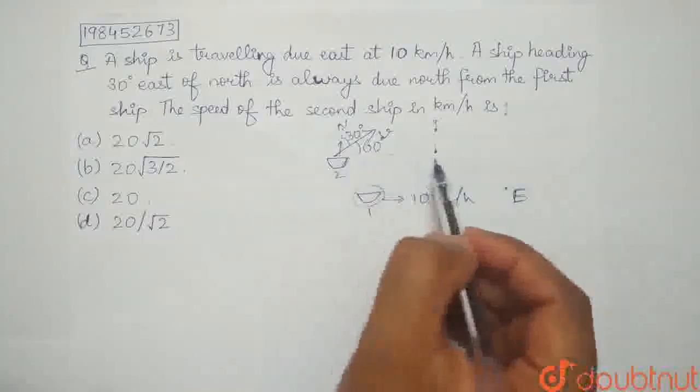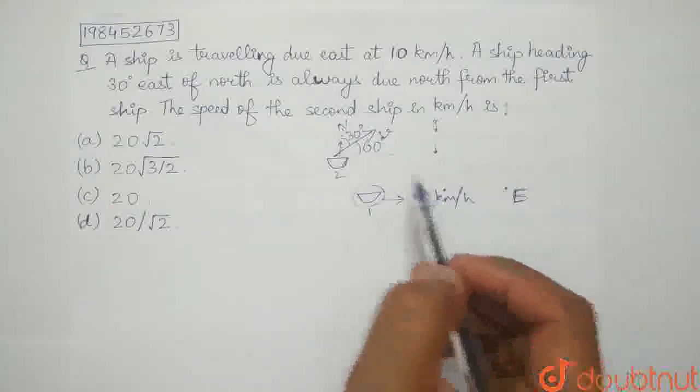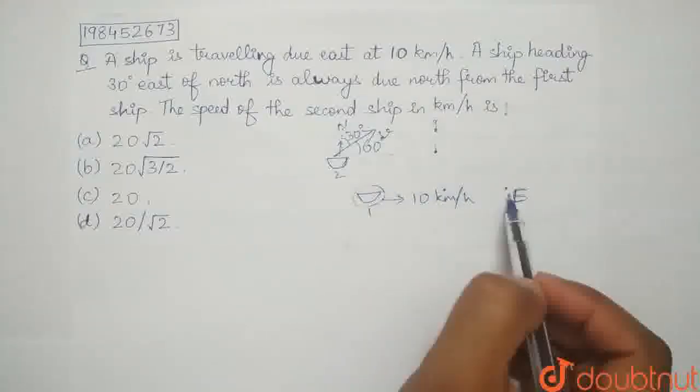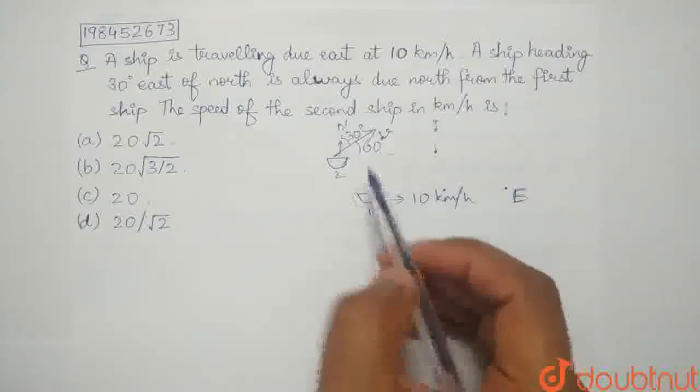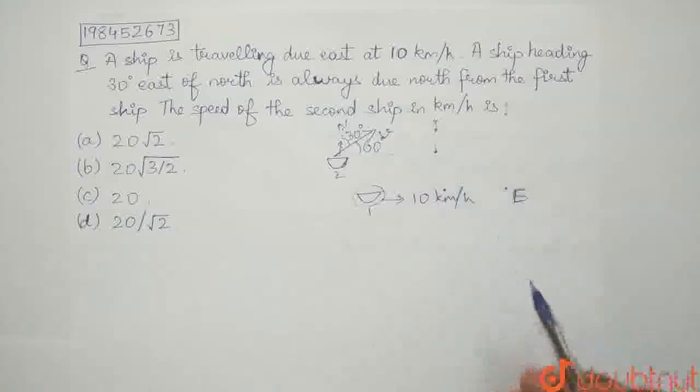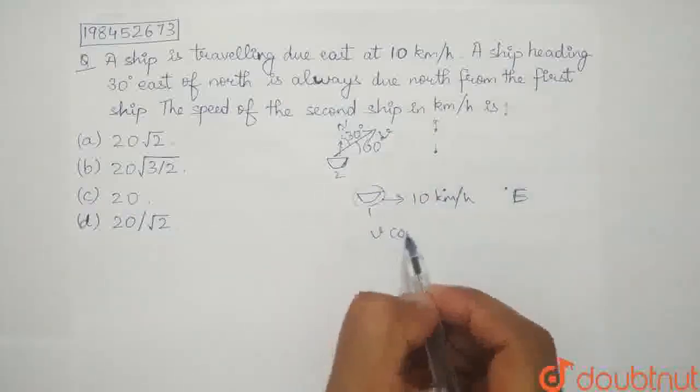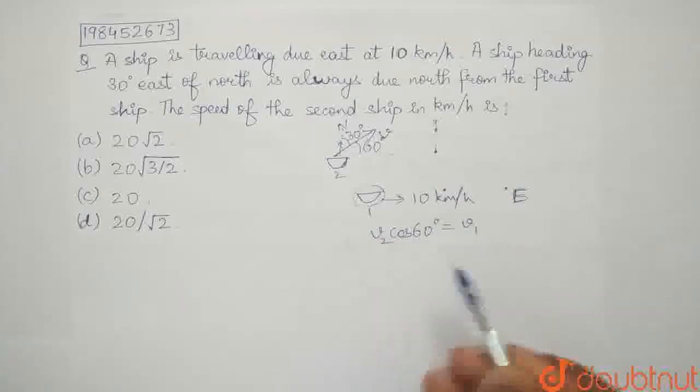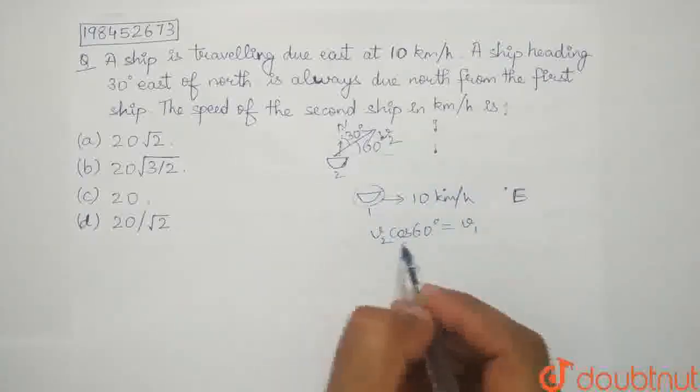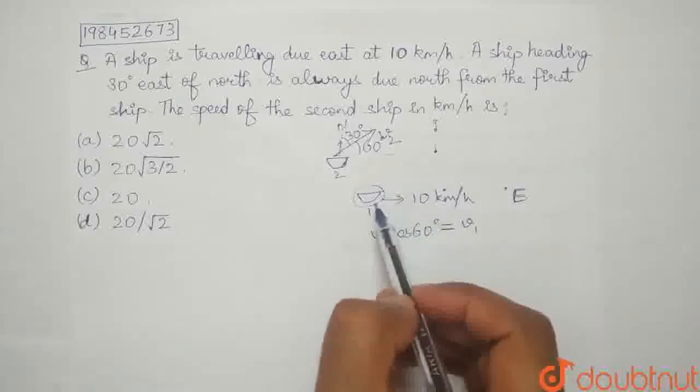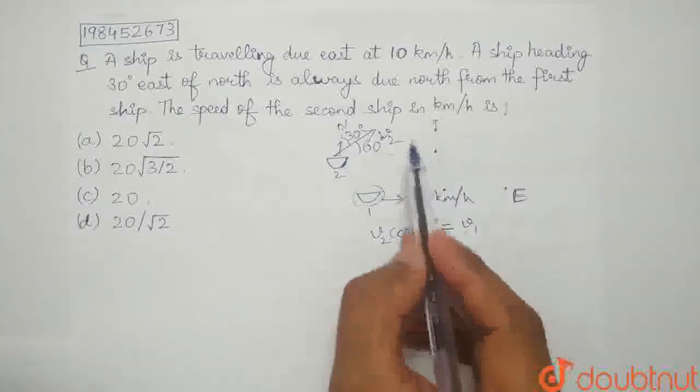So, this means that it is always due north from the first ship. For the ships to maintain this relative position, the eastward components of their velocities must be equal. This means that V2 cos 60 degrees equals V1.